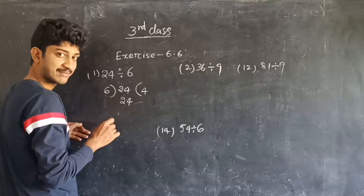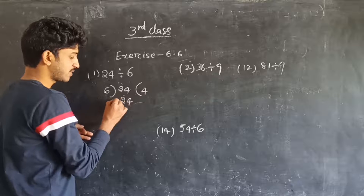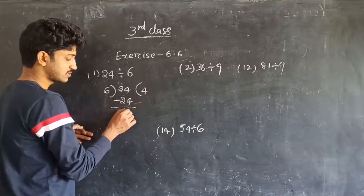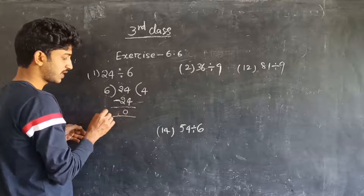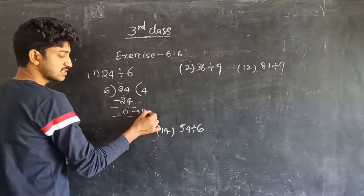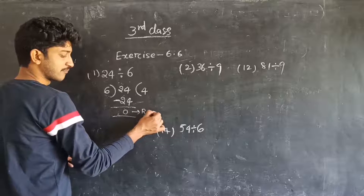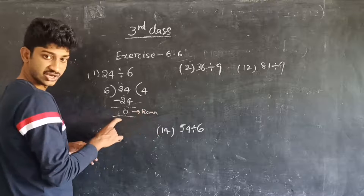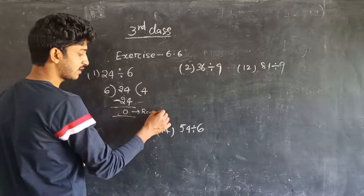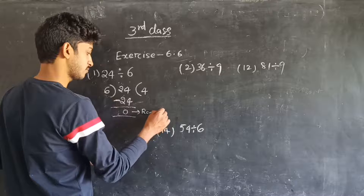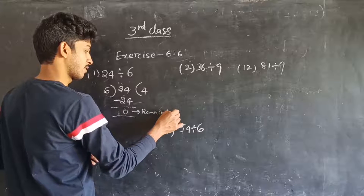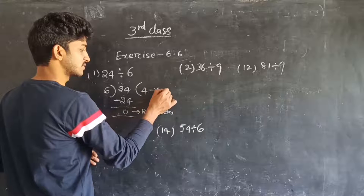Subtract: 24 minus 24 equals 0. This 0 is the final result, and it is called the remainder. And the quotient is 4.